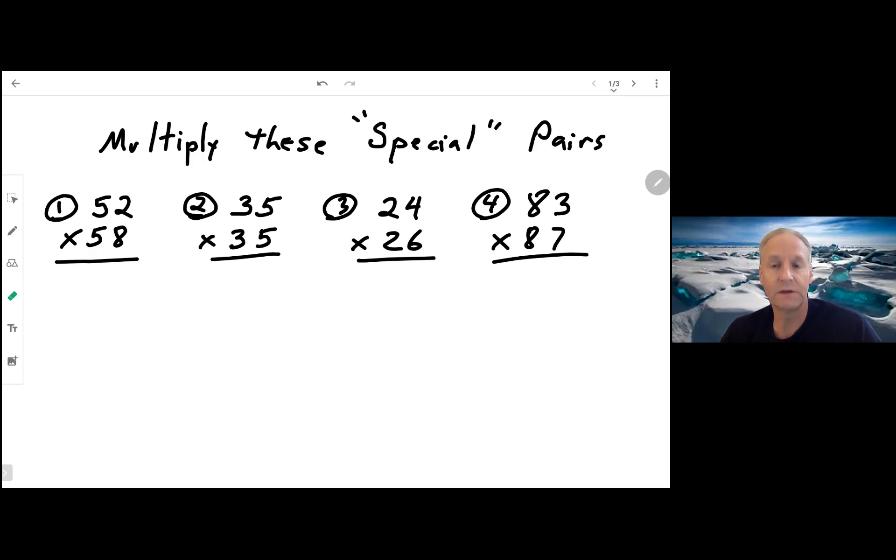I'm going to have you do this using your normal method. That would be the algorithm that you learn to multiply these together. And then we're going to talk about how to multiply these special pairs using a little shortcut that you will be able to multiply them in your head. So to start out, go ahead and copy these down and multiply them normally.